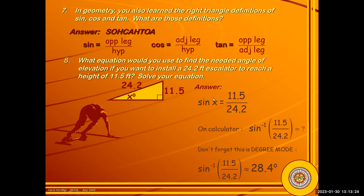What we're after is the angle x itself, so you can't just leave it in that form. You have to take the inverse sine to isolate the angle. Every algebraic function has an inverse function — on your calculator you typically have "sine to the minus one," called the inverse sine. Take the inverse sine of that ratio and you're solving for x, which comes out to about 28.4 degrees.